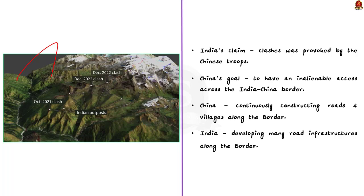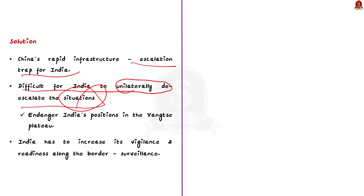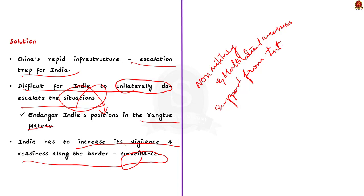For the solution, China's rapid infrastructure development has created an escalation trap for India. It is difficult for India to unilaterally de-escalate, as it would endanger India's position in the Yangtze plateau. India must increase vigilance and readiness along the border, including surveillance. It is also important for India to pursue non-military and multilateral measures in parallel to reduce the risk of accidental escalation, and to seek international community support to call out China's provocative behavior.